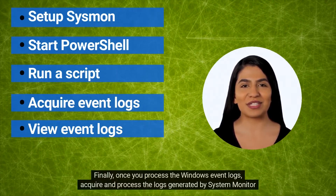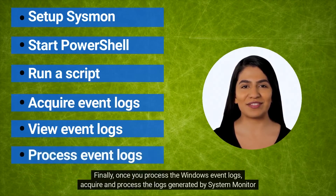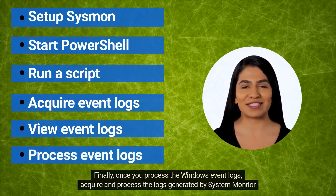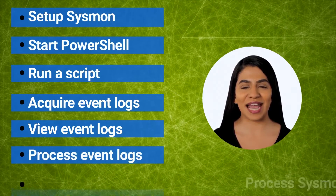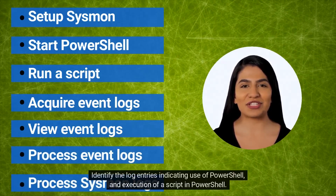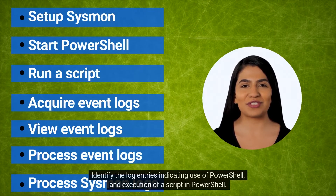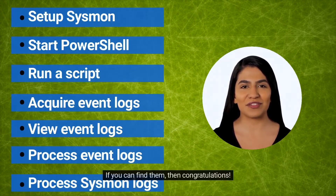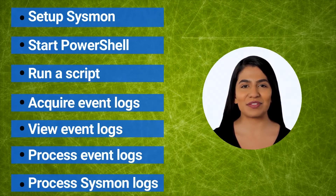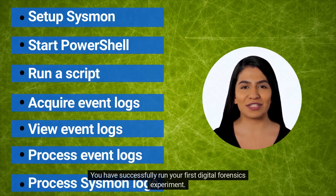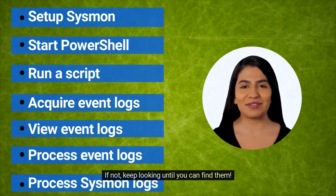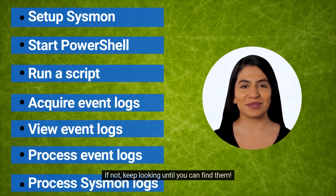Finally, once you process the Windows Event Logs, acquire and process the logs generated by System Monitor as well. Identify the log entries indicating use of PowerShell and execution of a script in PowerShell. If you can find them, then congratulations! You have successfully run your first digital forensics experiment. If not, keep looking until you can find them.